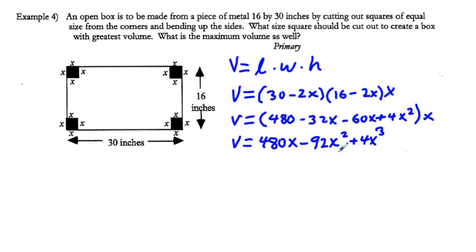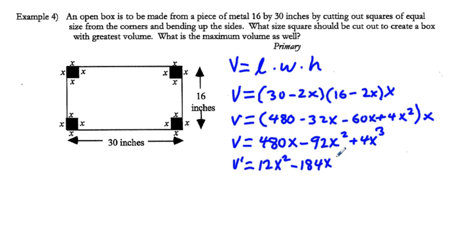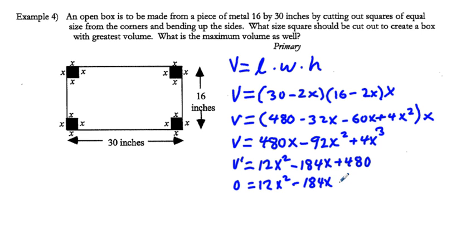Now let's take the first derivative to maximize. The derivative of 4x cubed is 12x squared, the derivative of negative 92x squared is negative 184x, and the derivative of 480x is positive 480. Setting this first derivative equal to zero: 0 = 12x squared minus 184x plus 480.